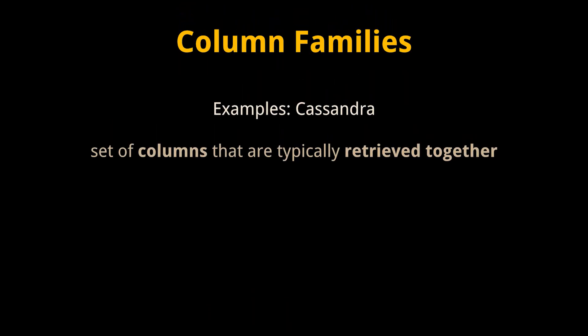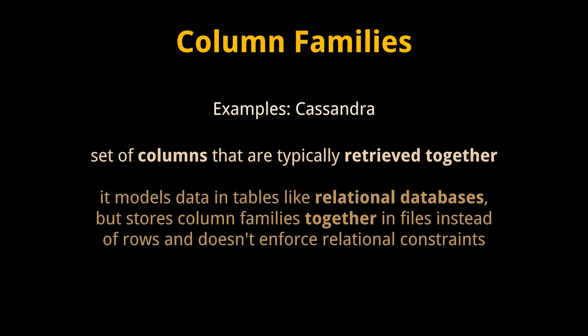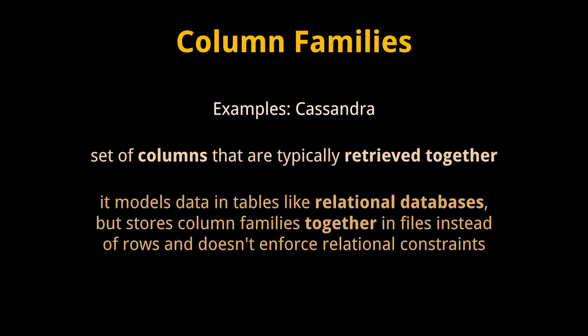Column families, such as Cassandra, are a set of columns that are typically retrieved together. A column family database models data in tables like a relational database but stores column families together in files instead of rows, and doesn't enforce relational constraints. For data with strong column family access patterns, this model boosts performance by limiting how much data needs to be read.